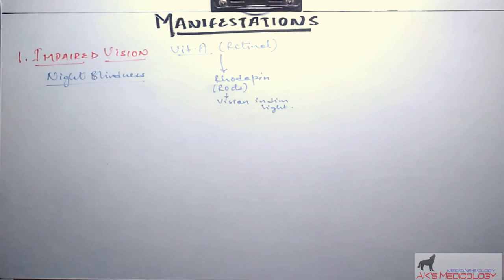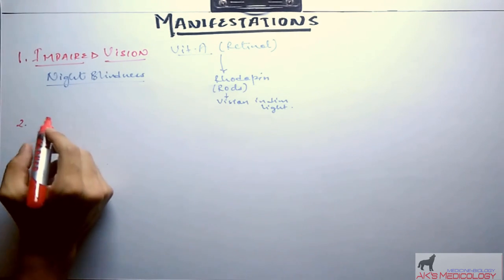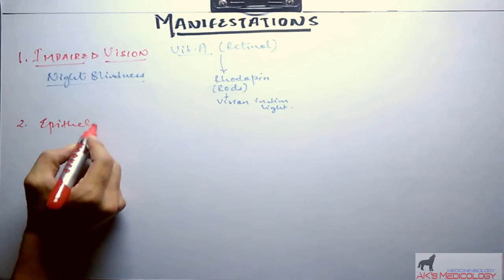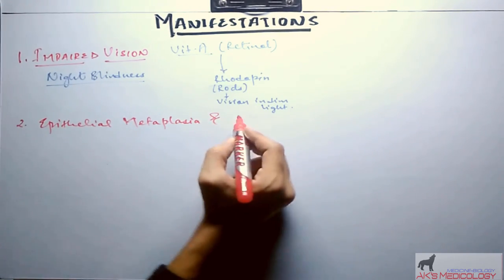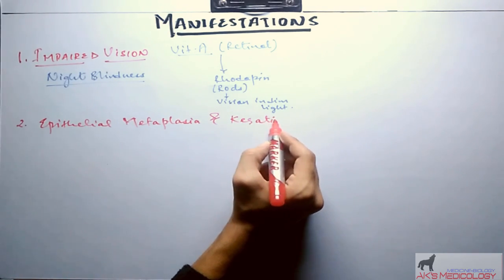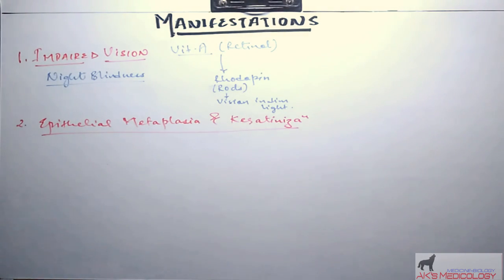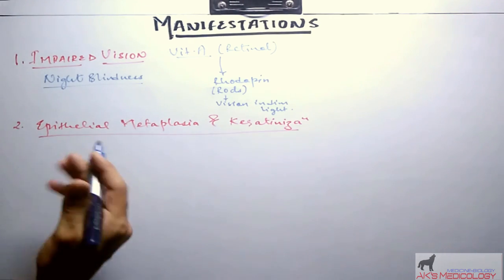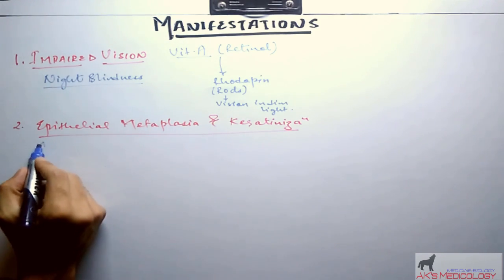Second important manifestation of vitamin A deficiency is epithelial metaplasia and keratinization. Metaplasia means transformation of one type of epithelium into another abnormal or non-useful type of epithelium, and keratinization means deposition of keratin protein where they are not required. There are various sites where epithelial metaplasia and keratinization occurs, of which important is the ocular epithelium.